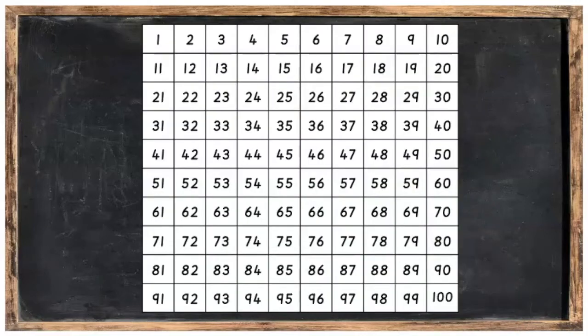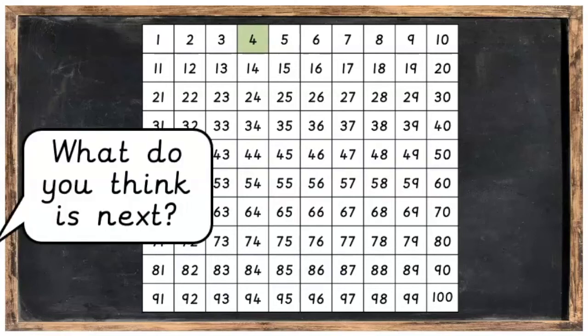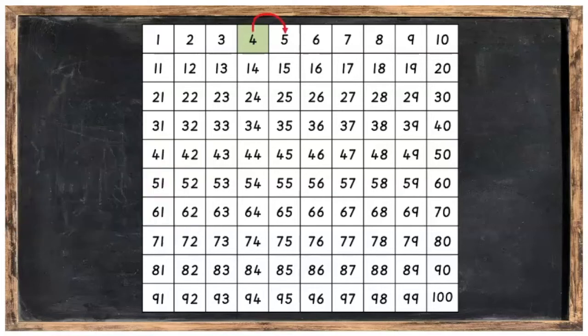Here we're going to skip count on the hundred square and we'll start off with the number four. What do you think is next? Well let's hop on four. Hop one, hop two, hop three, hop four. So eight will be next.